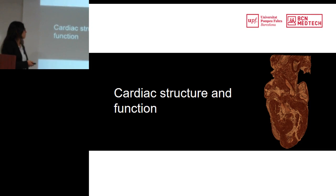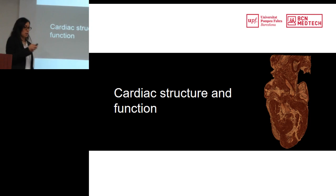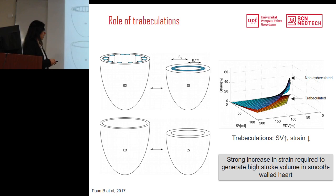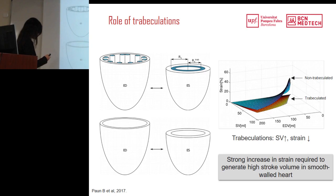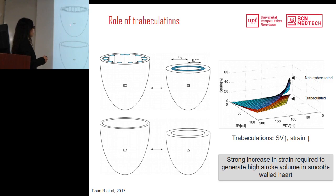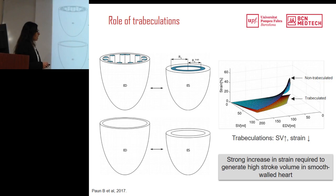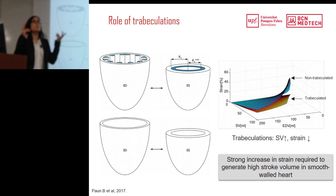The role of trabeculations is still unknown, so Bruno Pound developed a simplified model of a trabeculated ventricle. He modeled the left ventricle as half an ellipsoid, with trabeculations modeled as non-contractive tissue occupying a fixed volume, and compared it to the same model without trabeculations. Surprisingly, in the trabeculated heart, to eject the same stroke volume with a fixed end-diastolic volume, it does so with lower strains. This suggests that some degree of trabeculation is beneficial and helps cardiac function — something that needs to be taken into account when building models.